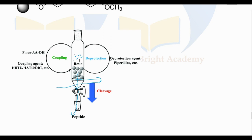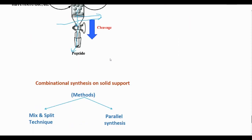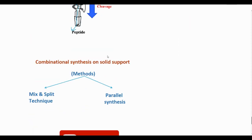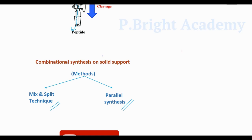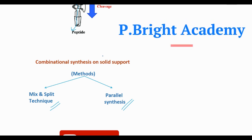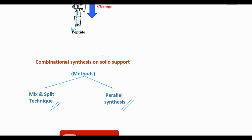You can use a solid support to prepare combinatorial synthesis. There are different methods — important methods are the mix-and-split technique and parallel synthesis. The significance is already discussed: time is saved, we prepare a lot of products at the same time, cost is reduced, and time is reduced. This method is used to prepare many compounds. This is combinatorial synthesis.